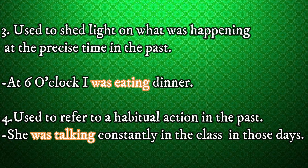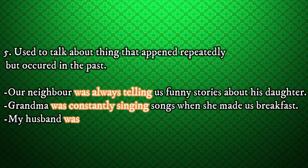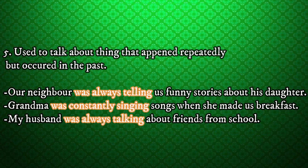Past continuous tense can indicate what was happening at a precise time in the past. For example: At six o'clock, I was eating dinner. It can also refer to a habitual action in the past. For example: She was talking constantly in the class in those days. It can be used with words like always, constantly, and forever to talk about things that happened repeatedly in the past. The action is not happening now and was a temporary habit.